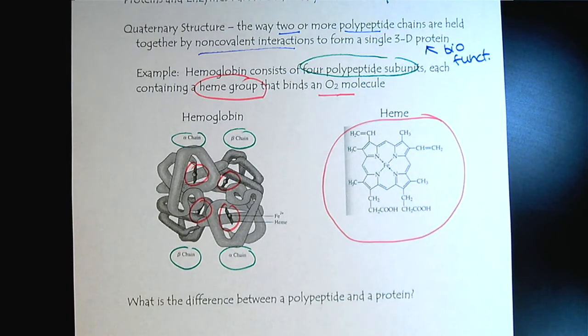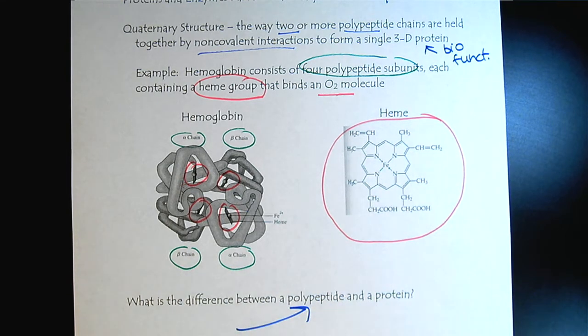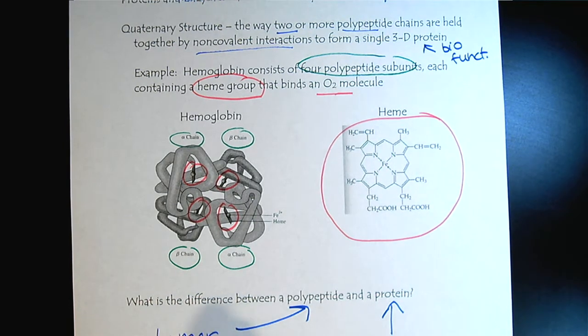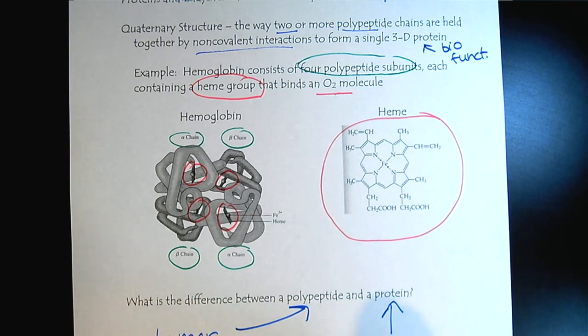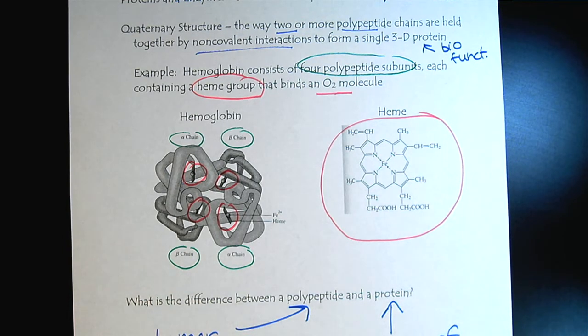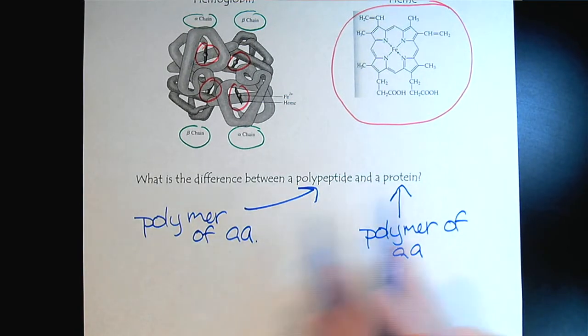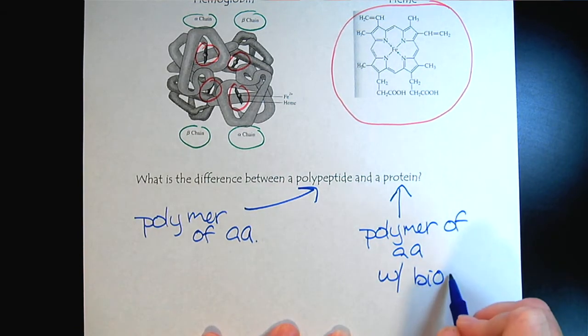One of the main points in this tutorial is to remember the difference between a polypeptide and a protein. A polypeptide is a polymer of amino acids, and a protein is also a polymer of amino acids. Polypeptides and proteins are both polymers of amino acids, but what makes it a protein is it has that biological function.